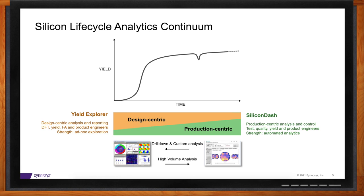A major feature that makes Yield Explorer different from other tools in the market is that it can ingest scan logic diagnostics data for failure root cause analysis. Silicon Dash, on the other hand, really shines with high-volume production data. Silicon Dash puts yield reporting analytics at your fingertips so that you can move through the data quickly. It looks at 100% of your incoming data and brings yield opportunities to your attention through our insights feature. Silicon Dash also has automated production control — for example, you might automatically apply DPAT and a cluster inking algorithm to every incoming wafer, and after inking the die, send a new bin map to assembly — all in a fully automated manner.